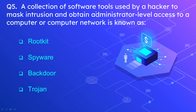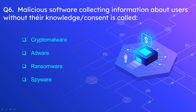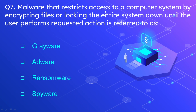Question number 5: A collection of software tools used by a hacker to mask intrusion and obtain administration-level access to a computer or network is known as what? The options are rootkit, spyware, backdoor, and trojan. The correct option is rootkit. Question number 6: A malicious software collecting information about users without their knowledge or consent is called what? The options are crypto malware, adware, ransomware, and spyware. The correct option is spyware.